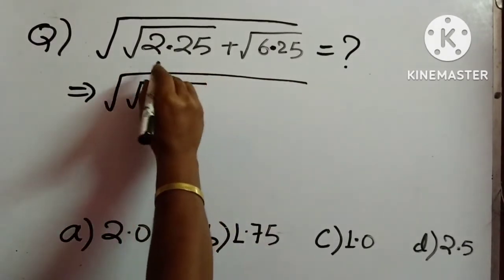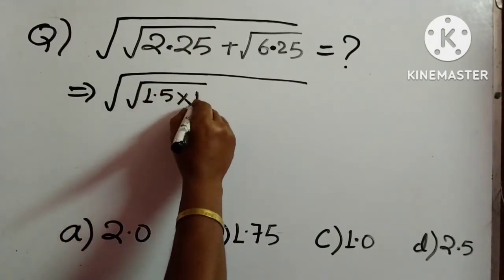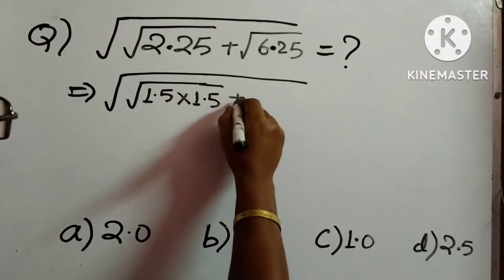So square root of 2.25, we can write like this 1.5 into 1.5. Similarly, 6.25 can be written as 2.5 into 2.5.